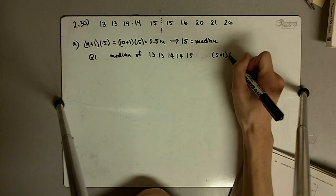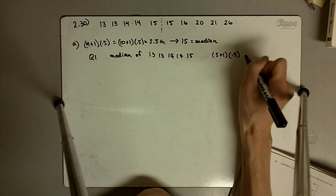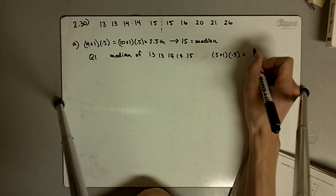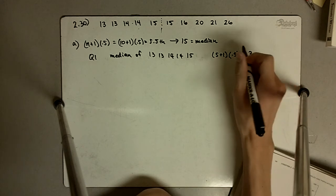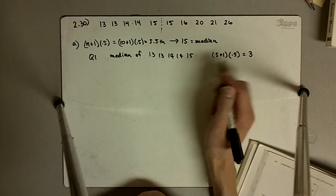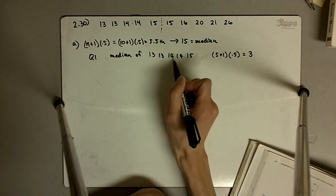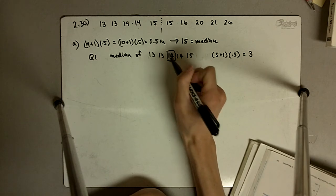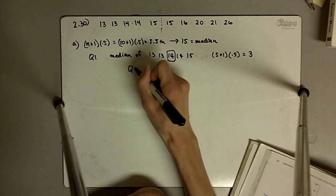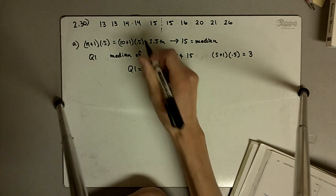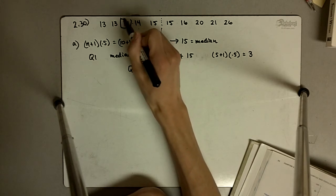So 5 plus 1 times 0.5 in this case is 3, so 6 times 0.5 is 3 and so the third number is 1, 2, 3, that's going to be 14, so Q1 is equal to 14.